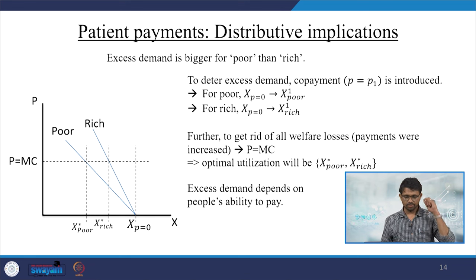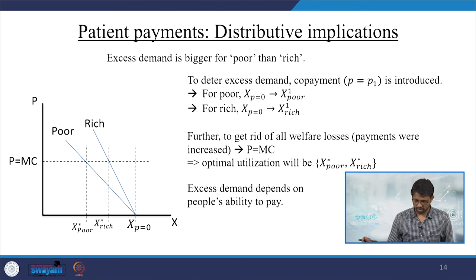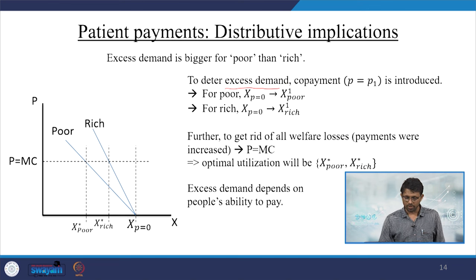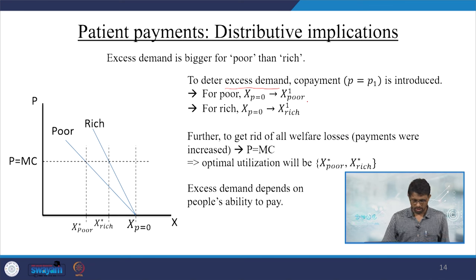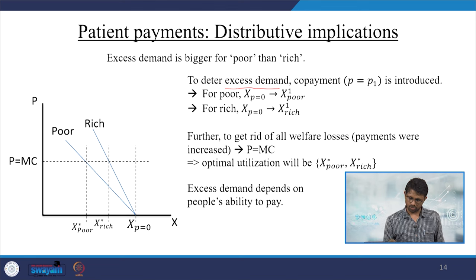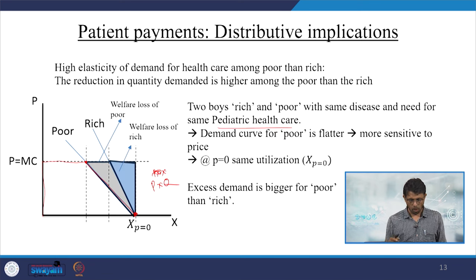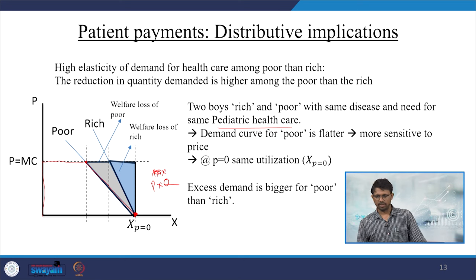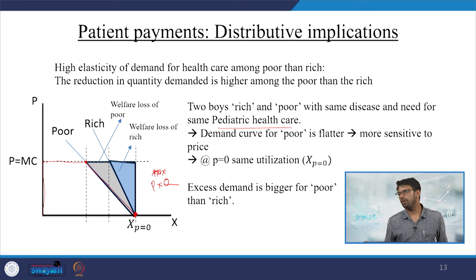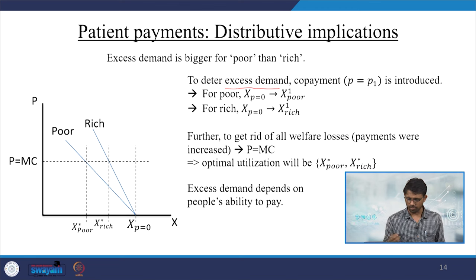The excess demand is bigger for the poor than the rich. To deter excess demand, a co-payment structure is introduced. Starting at xp equal to 0, poor begin at x1 and rich also begin at x1. Initially, if there is a market-based payment there are huge welfare losses; to reduce those welfare losses we introduce some form of co-payments.